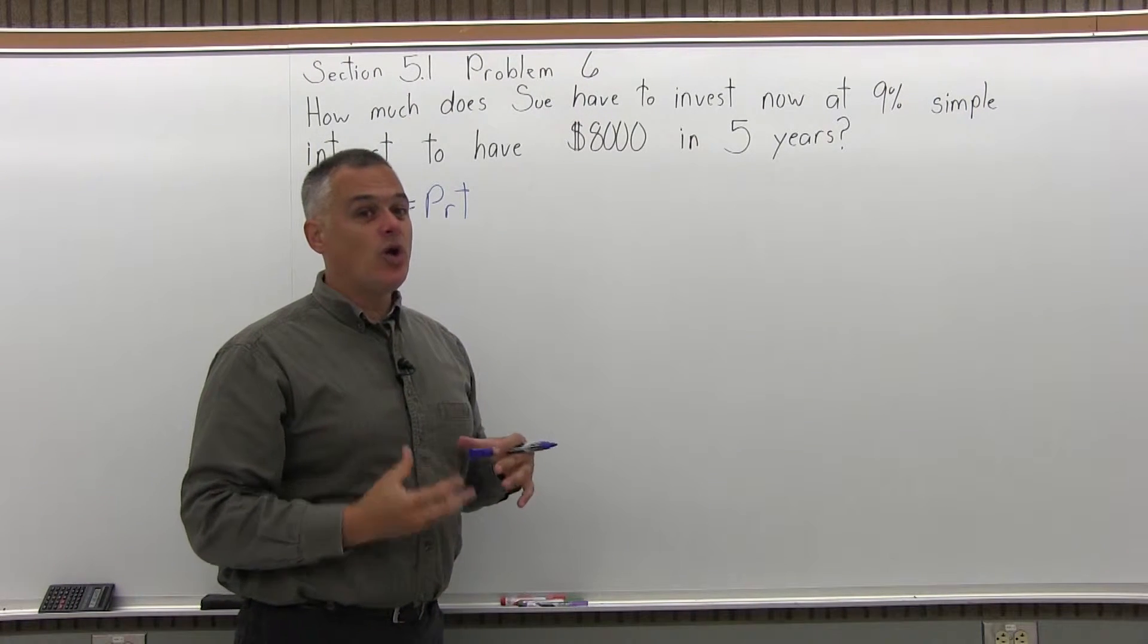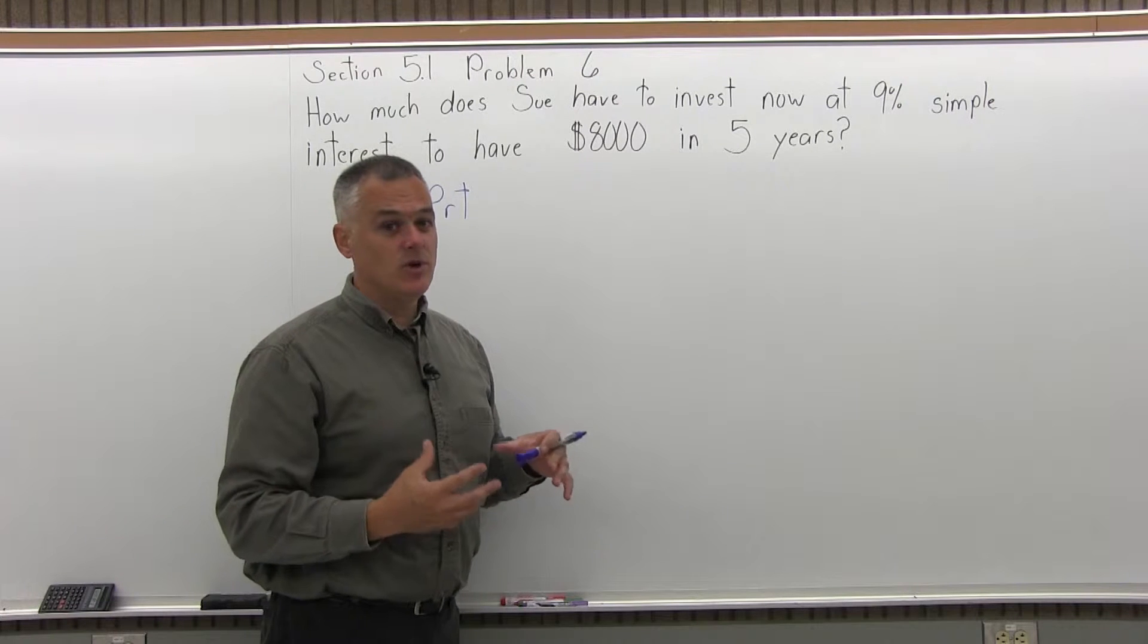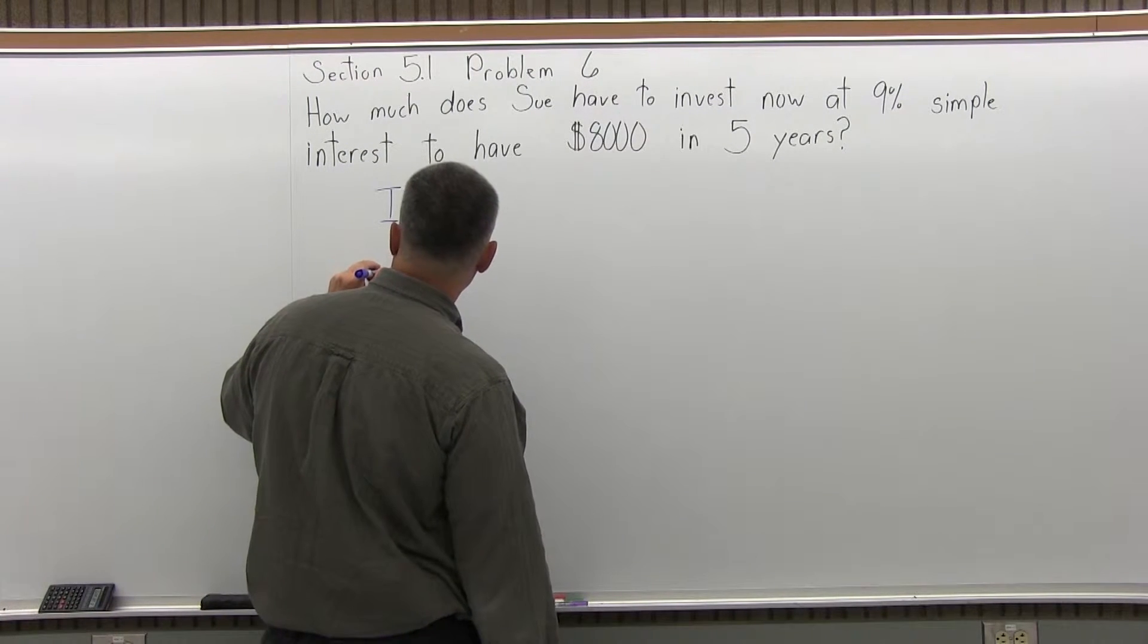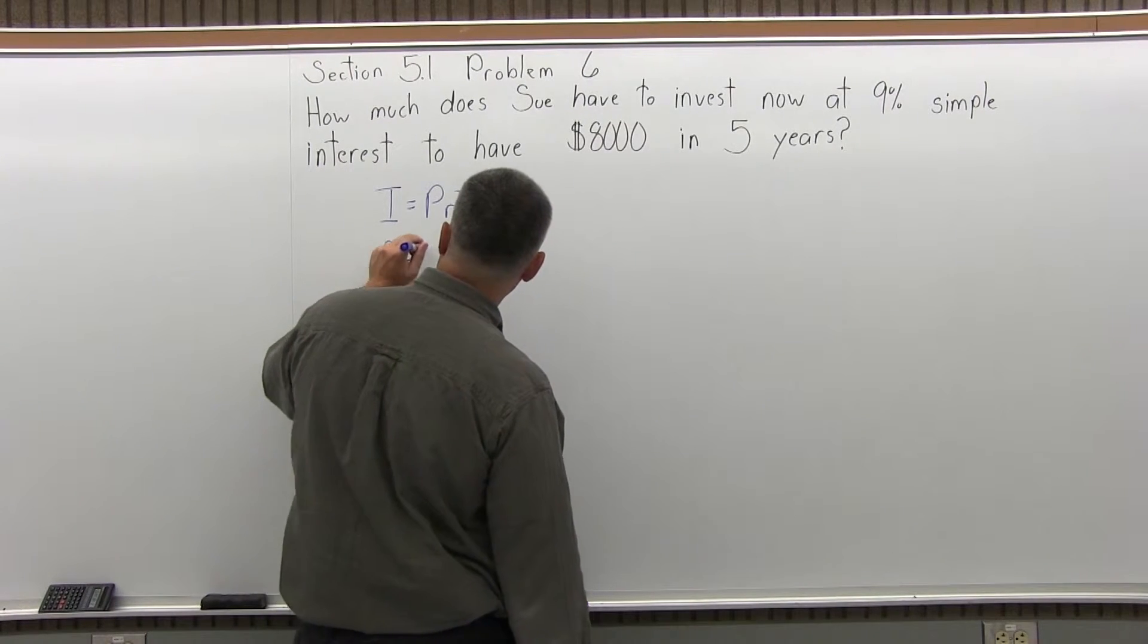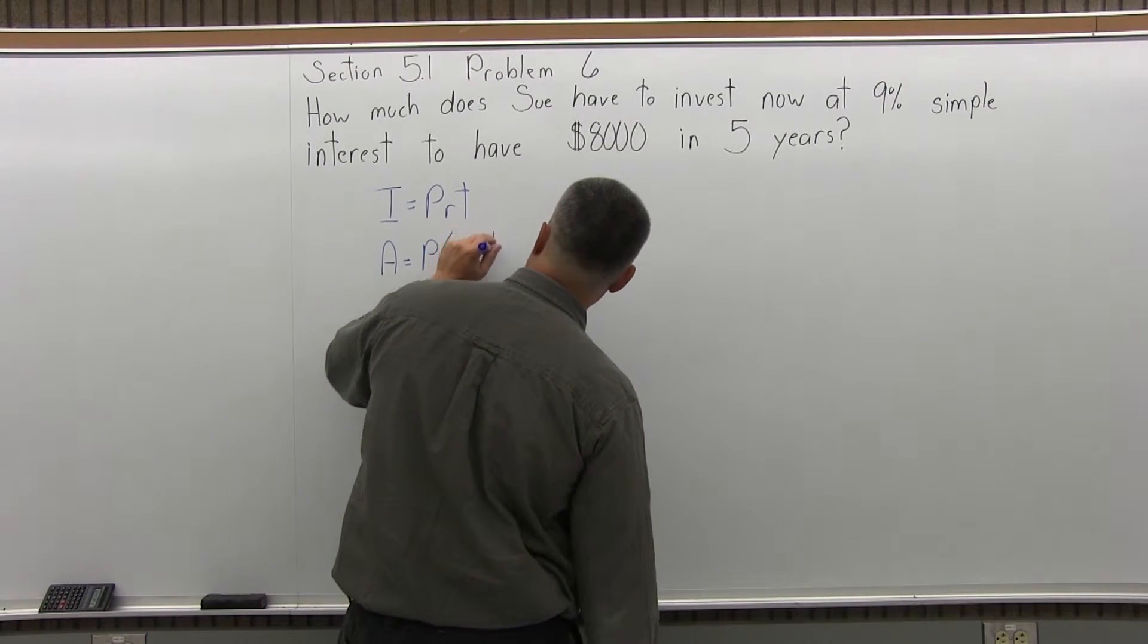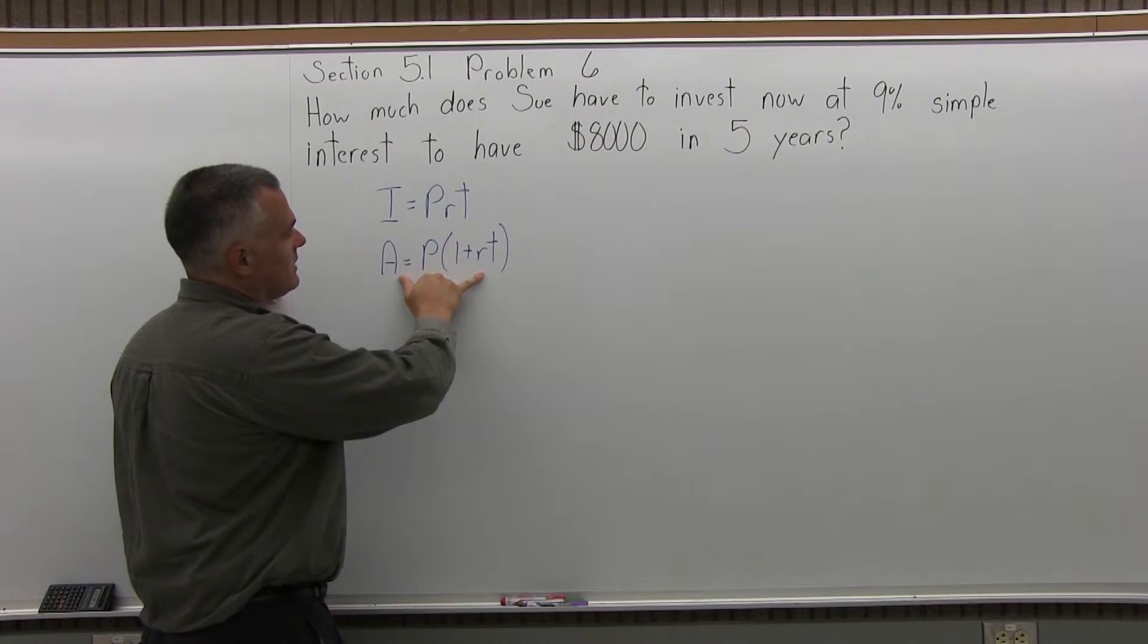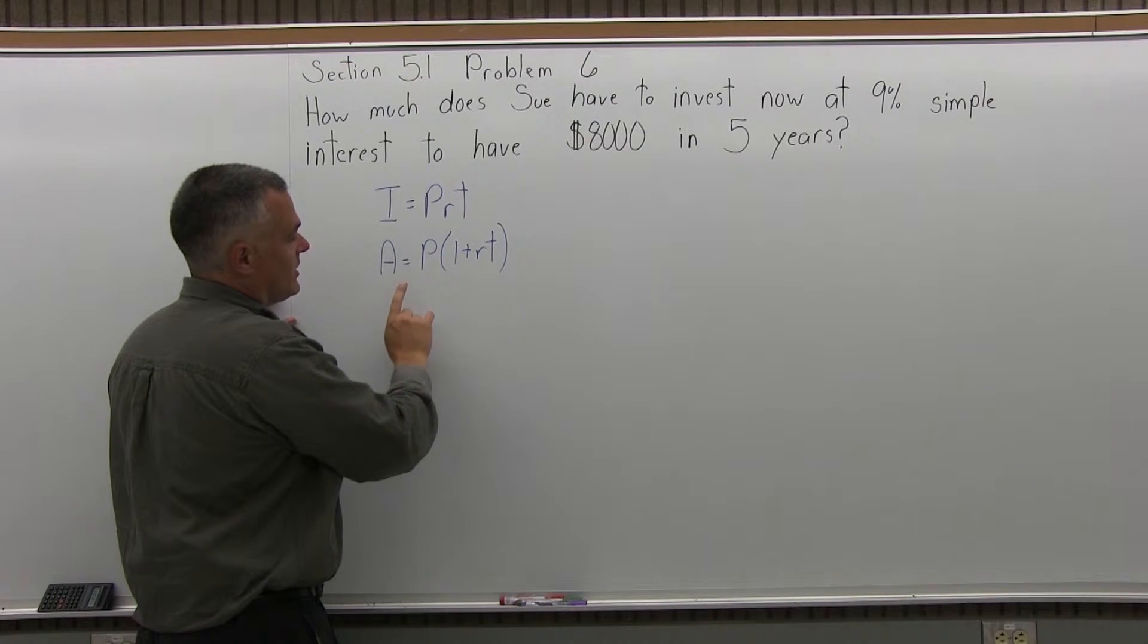So if you remember, there was an alternate simple interest formula that we go over in class, it's on the formula sheet for the finance formulas. It is A, the final amount, equals P times in parentheses 1 plus RT. This is an alternate simple interest formula that's based on this one. And now I have only one unknown, the P.